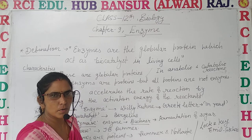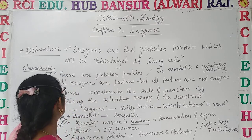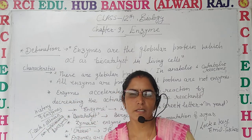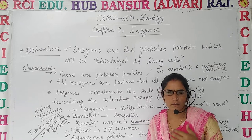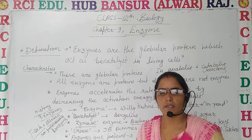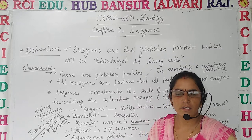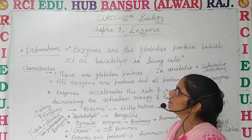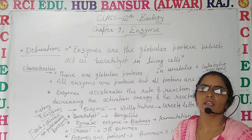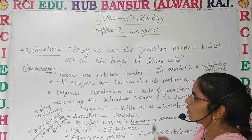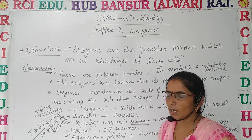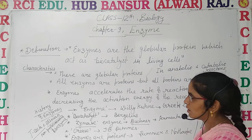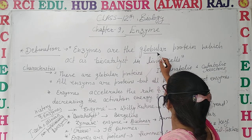This is the last chapter of this unit — Enzyme. A number of metabolic activities are taking place in our body regularly, and some components are helpful in enhancing the rate of these chemical reactions. These components are known as enzymes. So what are enzymes? Enzymes are the globular proteins.